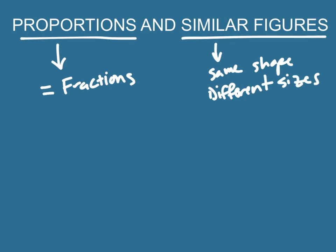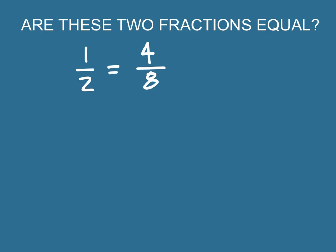What I want to do is link these two concepts together. The first thing I want to talk about is solving proportions. So the first thing we want to talk about is are these two fractions equal? Are these numbers proportional? One thing that we can do to figure this out is to find a decimal approximation. If you take one and divide it by two, you get a decimal value of 0.5. And if you take four divided by eight, you get the same decimal of 0.5. So when you get the same decimal value, then yes, these two fractions are equal.